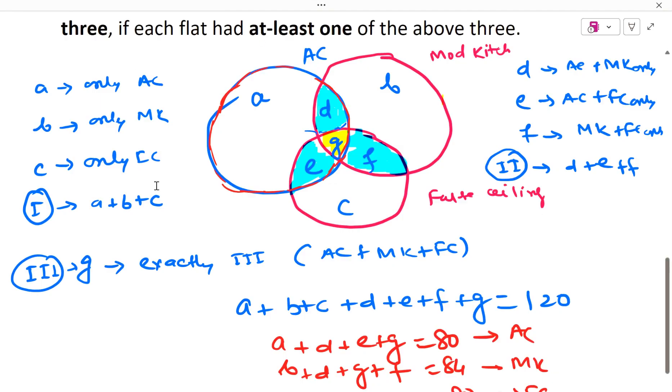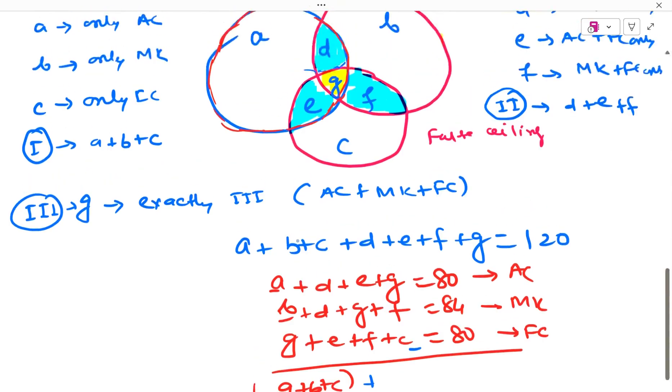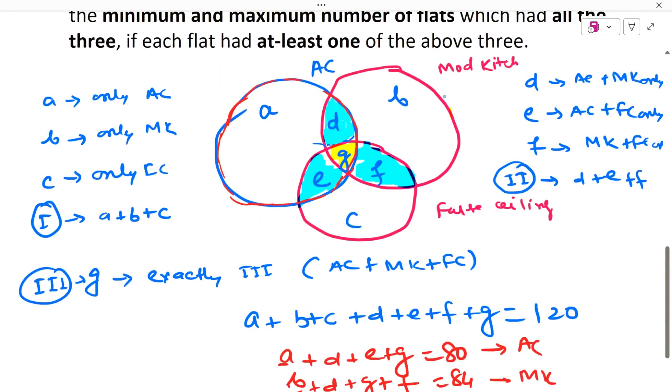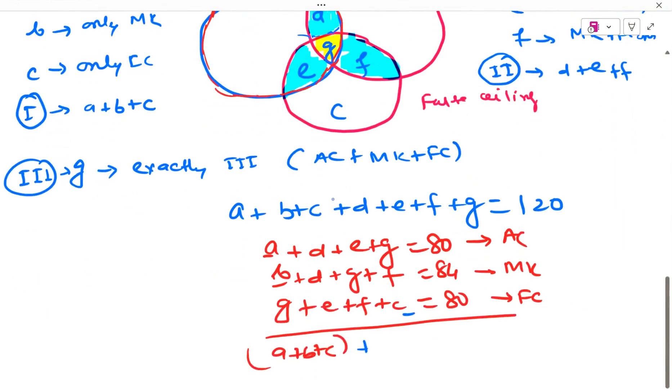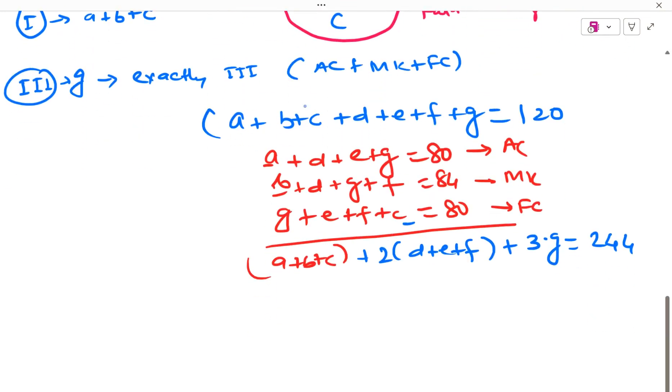So these three equations I am getting. Let us sum this up. So A plus B plus C. You can see all of them appear once only. A is once, B is once, C is once. But D, E and F appear twice because they are in both the circles. D is in AC circle and modular kitchen circle. F is in modular kitchen and false ceiling. And E is in AC and false ceiling. So D, E, F is appearing two times. And then G is appearing three times. And I have the sum as 80 plus 84 plus 80 which is 244.